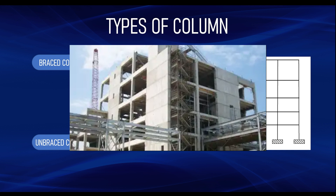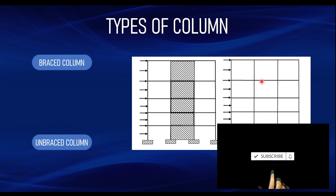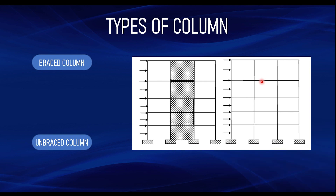In the unbraced building, the lateral loads are resisted by the columns and the beams themselves. Technically, a braced column is a column in which the load imposed is purely from gravity load — dead load and live load. An unbraced column, on the other hand, is subjected to gravity load — dead load and live load — plus lateral loads, because there is no bracing element to protect the structure from lateral effects. That is why in high-rise buildings you typically see shear walls added at some faces of the building, to resist lateral loads and ensure that columns and beams are designed as braced.